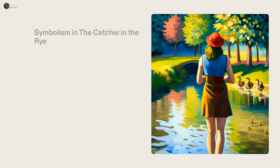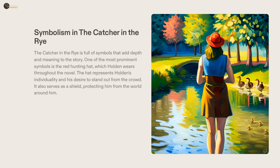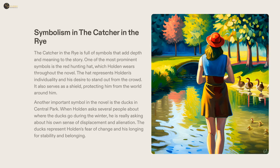In J.D. Salinger's classic novel, The Catcher in the Rye, symbols are used to depict the feelings and emotions of the protagonist, Holden Caulfield. Holden is often seen wearing a red hunting hat, which symbolizes his individualism and his desire to stand out. Furthermore, the ducks in Central Park represent his fear of change and his longing for a sense of stability and belonging. The symbols used in the novel provide a unique and meaningful interpretation of Holden's journey, making The Catcher in the Rye an iconic classic.